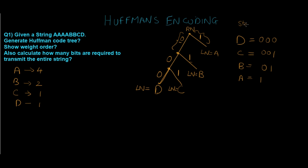That was starting from the root node. If you start from the leaf node, the values are reversed: for d it is 000, for c it is 100, for b it is 10, and for a it is 1.